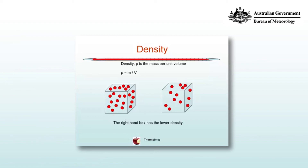Therefore, in this example, the box on the left has a higher density and the box on the right has a lower density compared to each other.